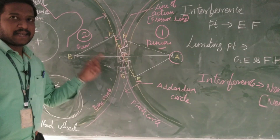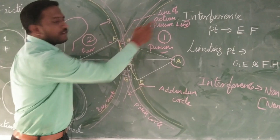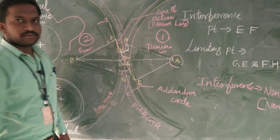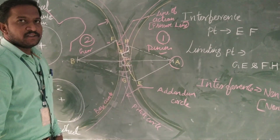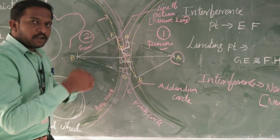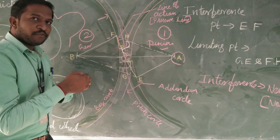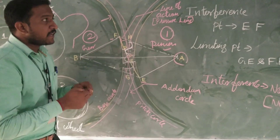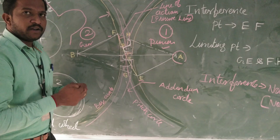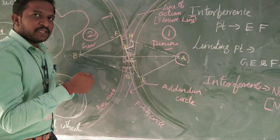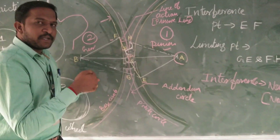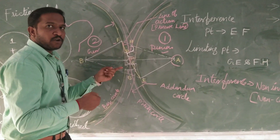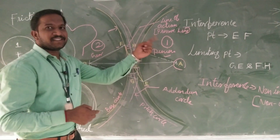This line is called the line of action, or it is called the pressure line. When the two gears are in mesh, the path of contact is on this line only - that is why it is called the line of action. While meshing, the force acting on the other gear is passed through this line only, so it is also called the pressure line.